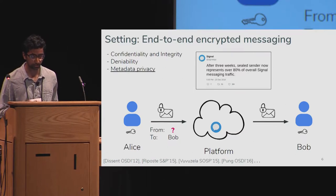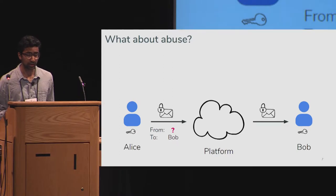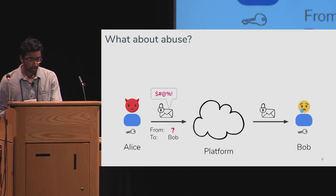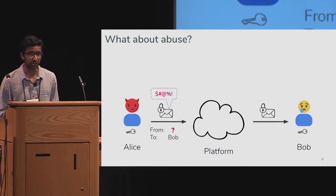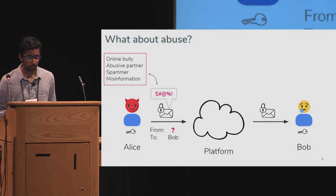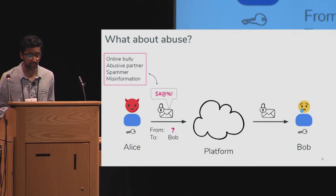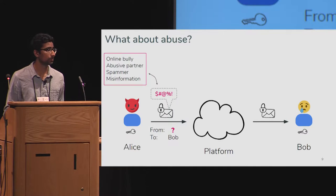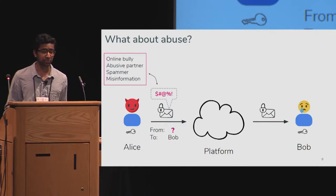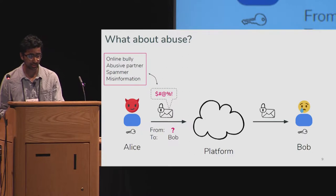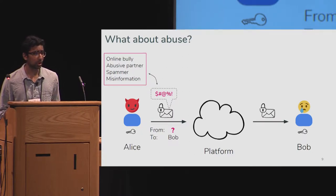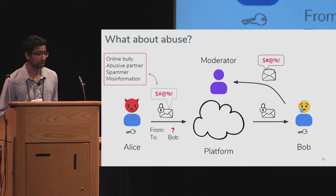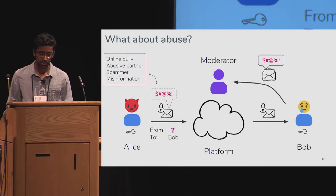But what about abuse? There are countless forms of abuse that surface on online platforms. Alice could be a cyberbully or an abusive ex-partner harassing Bob with abusive messages, or perhaps a spammer sending dangerous bait messages hoping for link clicks. More recently, we've seen news about the prevalence of misinformation campaigns, which have contributed to political instability and in some cases even incited riots and lynchings.